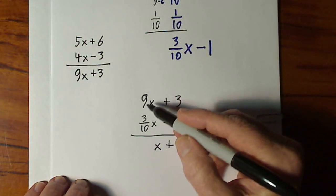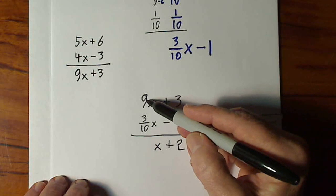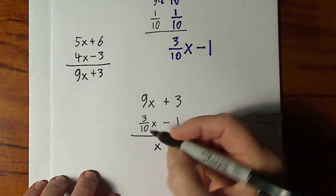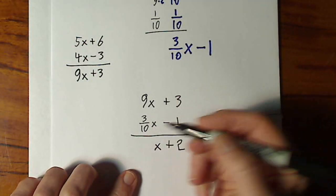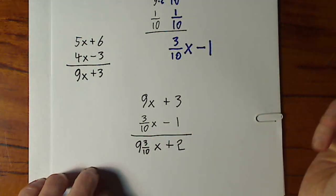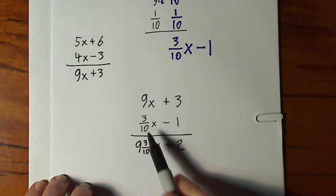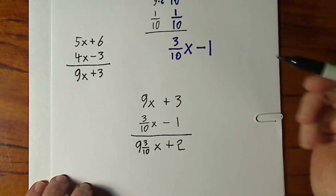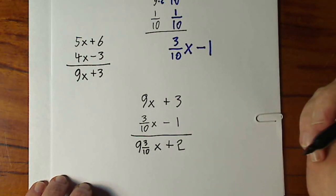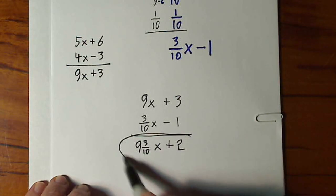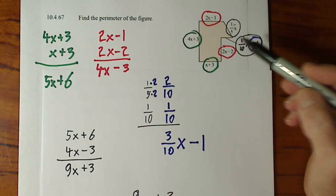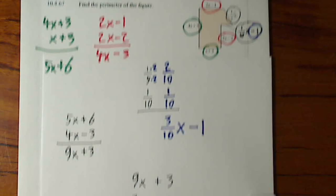And the nice thing about addition is if you're adding an integer and a fraction, you can simply add them really with no calculations. 9 plus 3 tenths is 9 and 3 tenths. It might seem strange. If I was subtracting, I would have to use a different method. But because I'm adding, I can just combine the 9 and the 3 tenths. 9 plus 3 tenths. So this is your final answer for the perimeter of this shape. And I'll put it back up here.